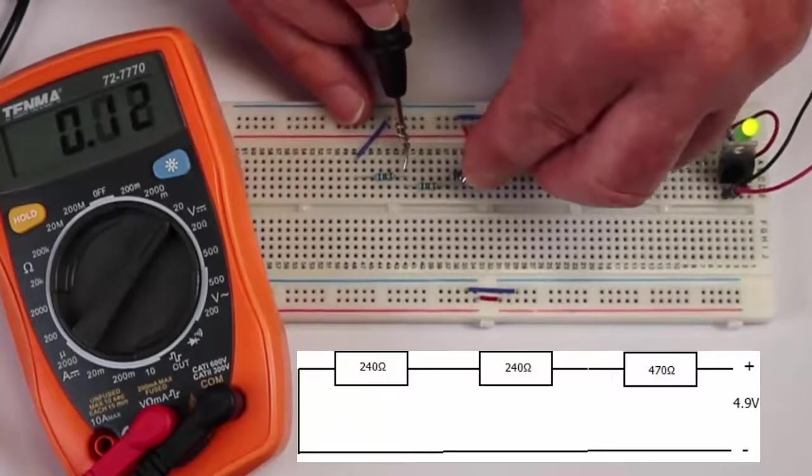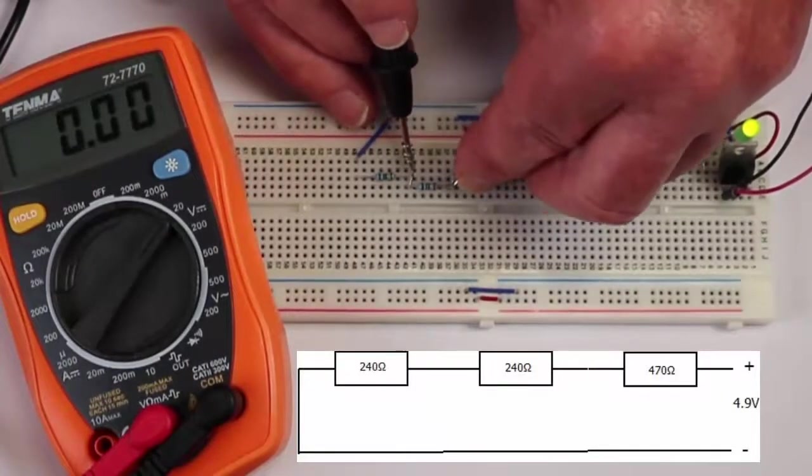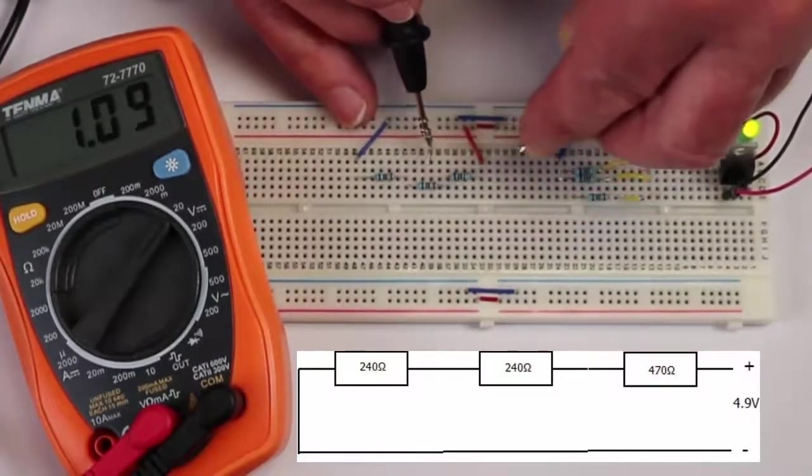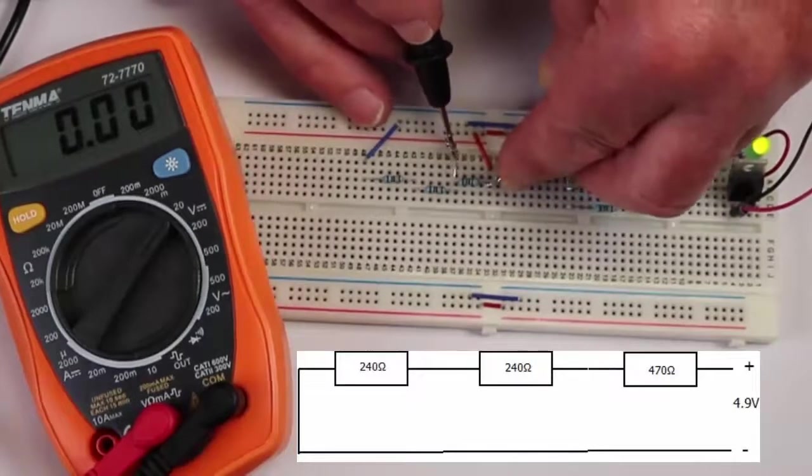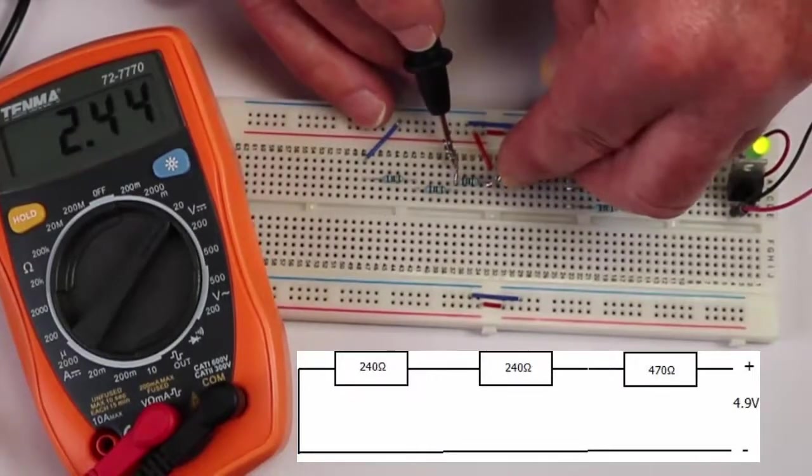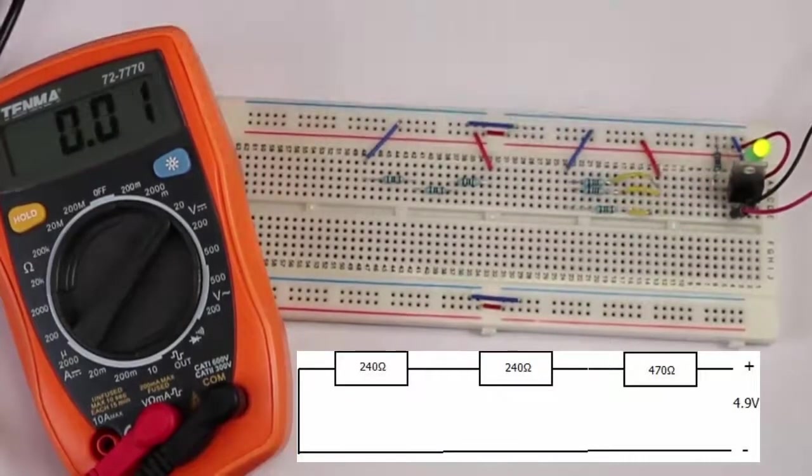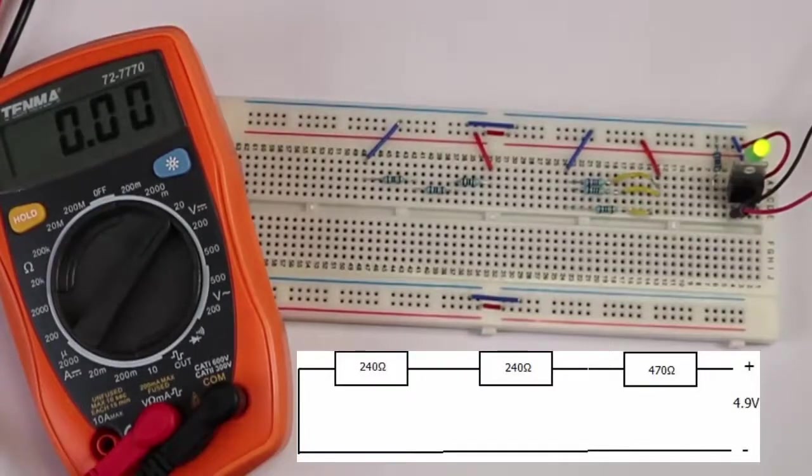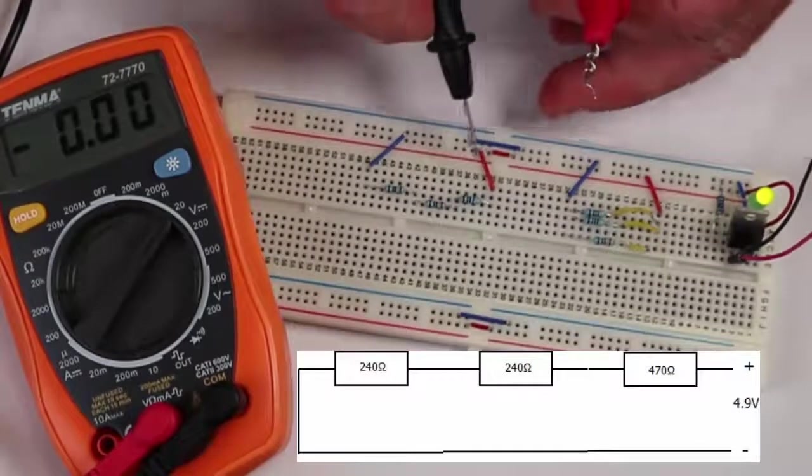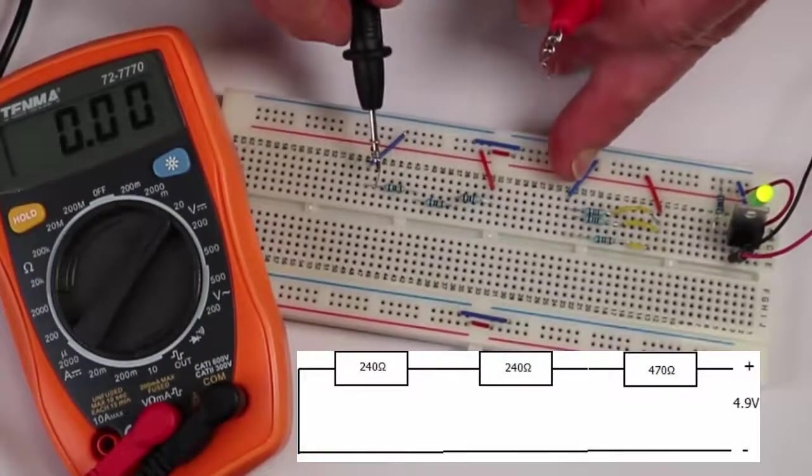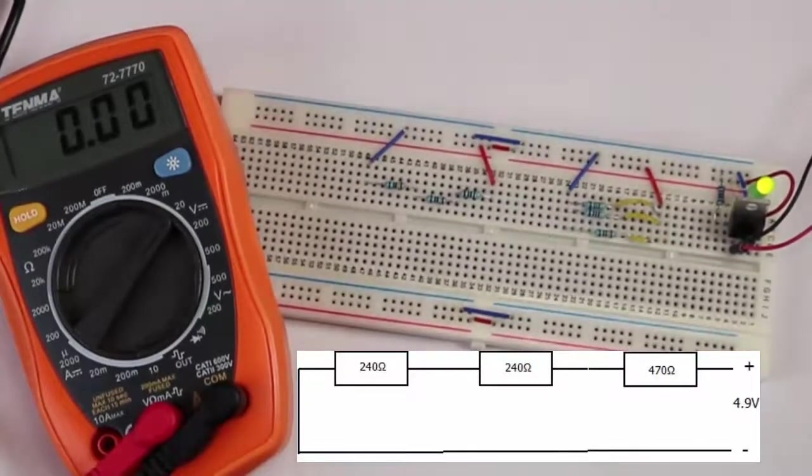So we have 1.24 plus 1.24 which is 2.48 plus 2.44, so it gives us about 4.9 volts. That proves, as for Kirchhoff's second law, that the EMF acting in a loop equals the sum of the potential differences dropped across the components in the loop.